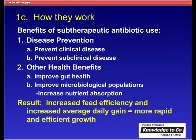In terms of how subtherapeutic antibiotics work, they function in two different ways, mainly in disease prevention. They prevent clinical diseases — those that are readily apparent and can decimate a herd — but also subclinical diseases that aren't readily apparent, which even a vet may not pick up. There are other health benefits as well: antibiotics improve gut health and improve the microbiological populations within the gut, aiding in nutrient absorption. The result is increased feed efficiency and increased average daily gain, which translates to more rapid and efficient growth.